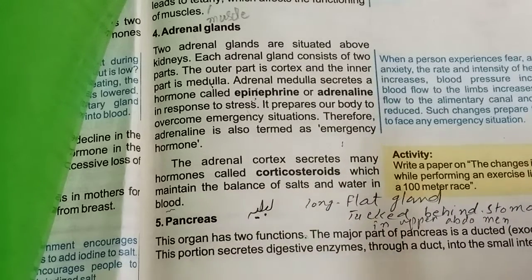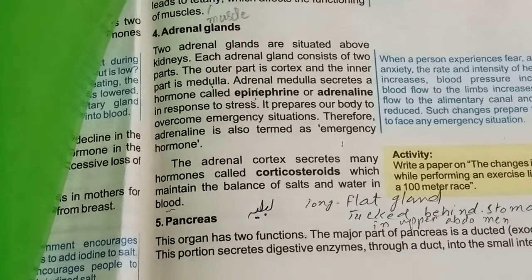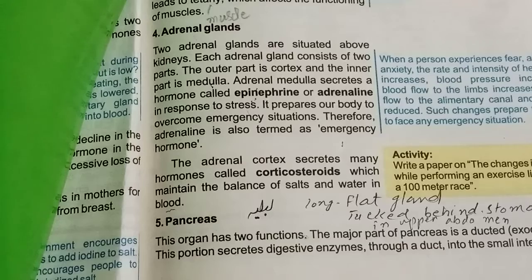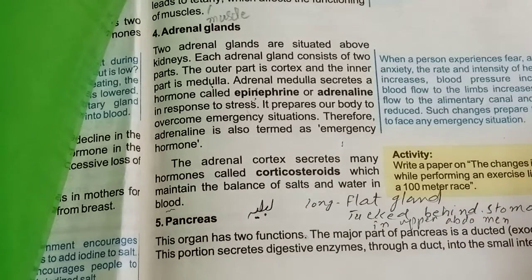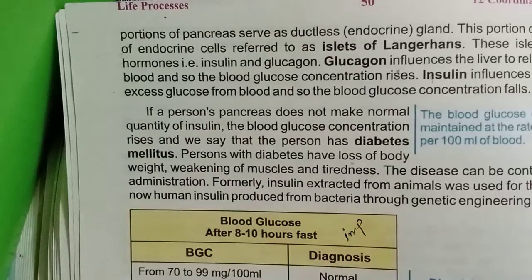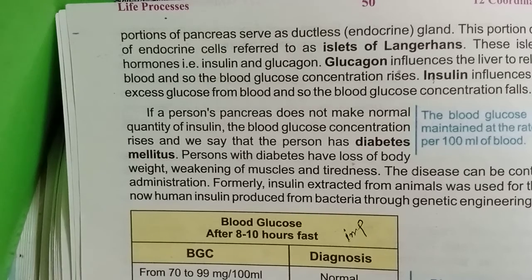This organ acts as both an exocrine and an endocrine gland. As an exocrine gland, it has ducts. Certain portions of the pancreas secrete digestive enzymes through ducts, because it is attached to the stomach which is involved in digestion. These digestive enzymes are secreted through ducts into the small intestine.